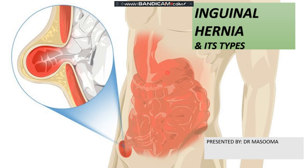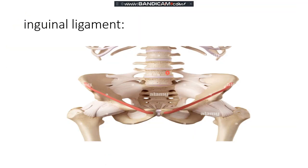Welcome to my YouTube channel. Today we will discuss inguinal hernia. Before starting with the abnormal condition, we have to first discuss the normal condition. This is the inguinal ligament, as you can see in this picture. This is the anterior superior iliac spine, which is connected with the pubic tubercle. This band-like structure is the inguinal ligament.